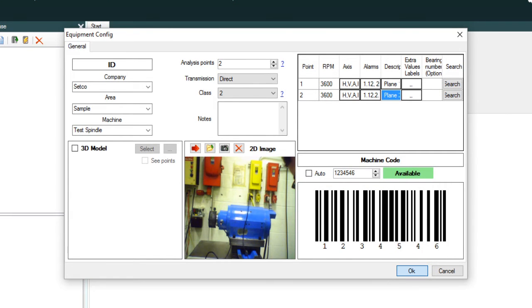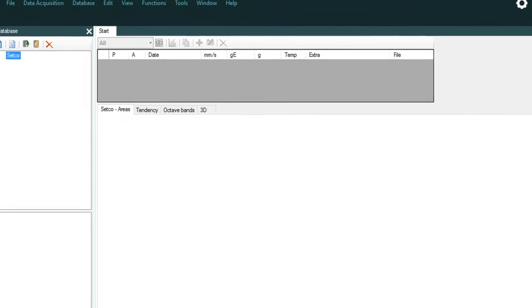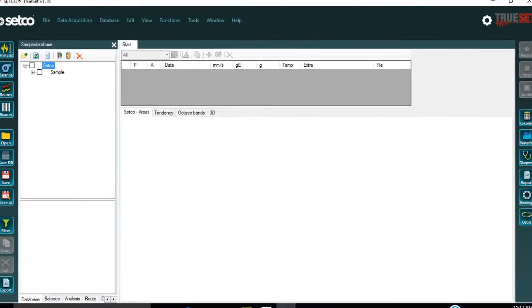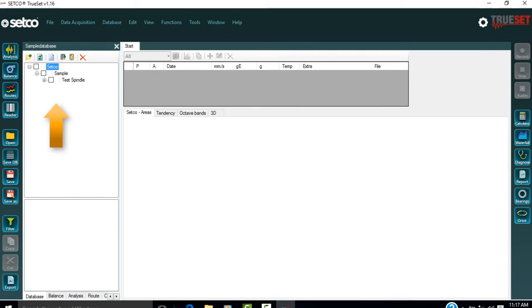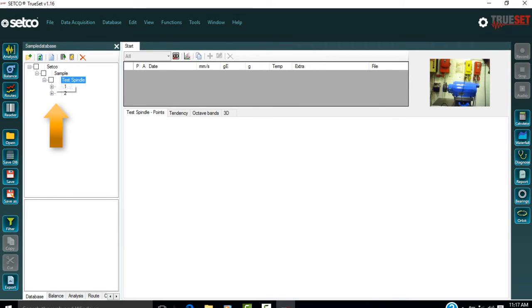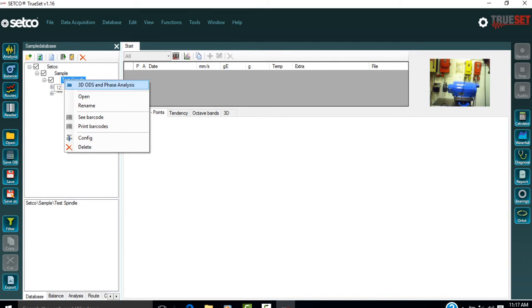Lastly, click OK and the equipment is now in the database. To look at the equipment entered, click on the corresponding company and area in the database window. By right-clicking on the equipment name, with the checkbox checked, the barcodes can be viewed or printed using Microsoft Word.